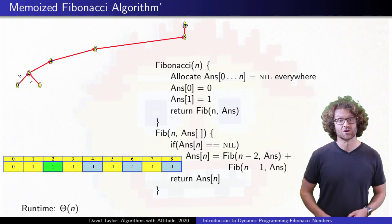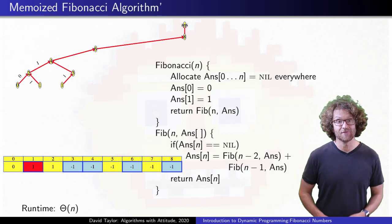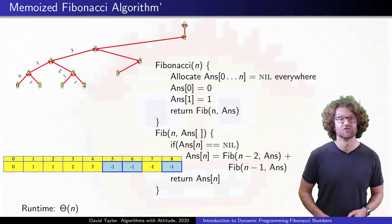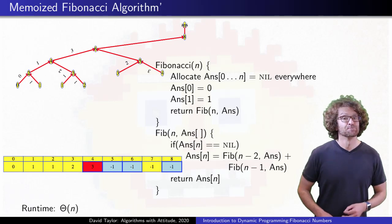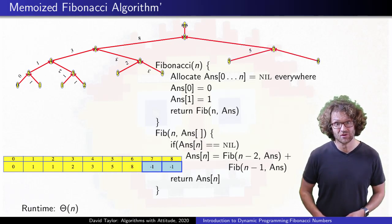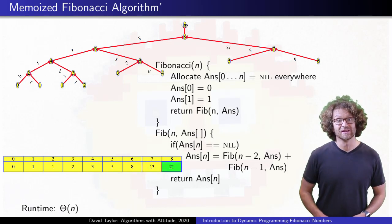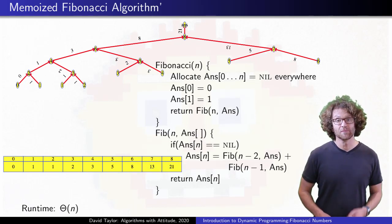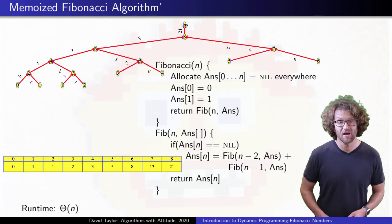In the table, we see recursive calls skipping every other value, and then calling those values as you start to fill in lower values. But even though recursive calls are made in different orders, the table gets filled in just the same as before, from the left to the right, one at a time.